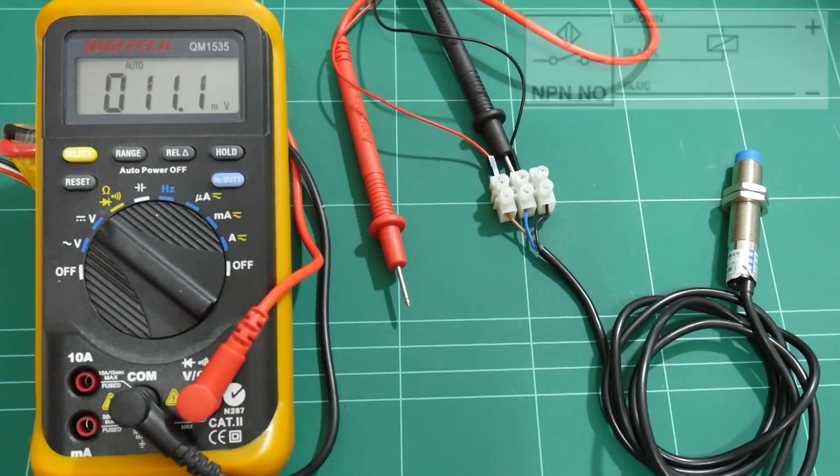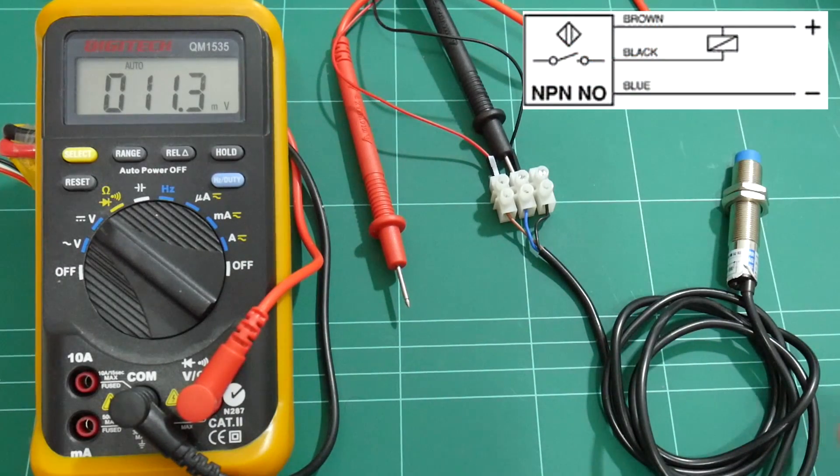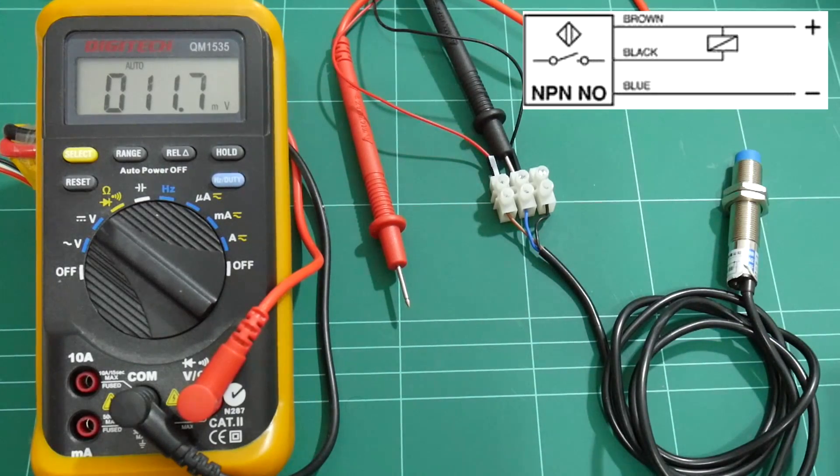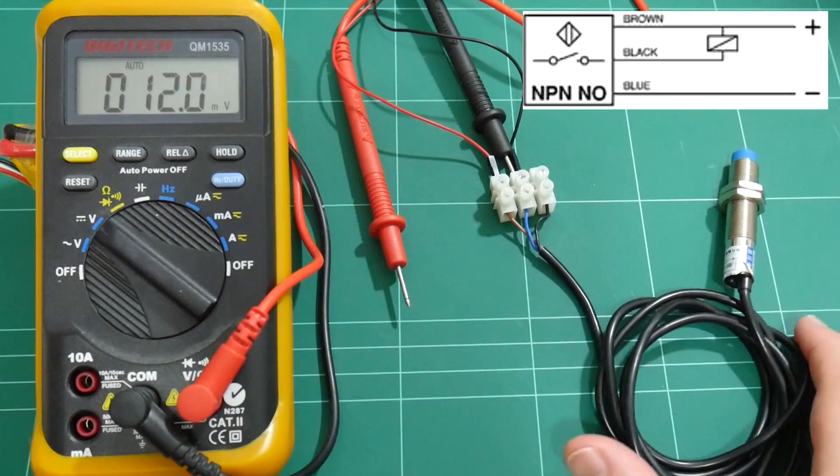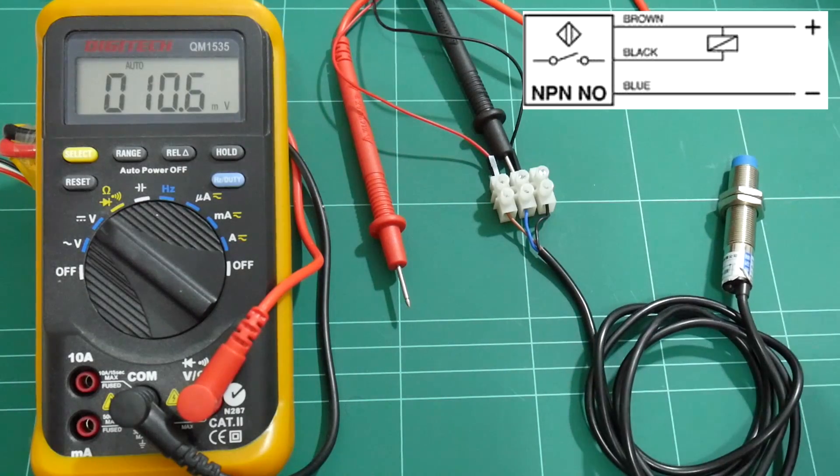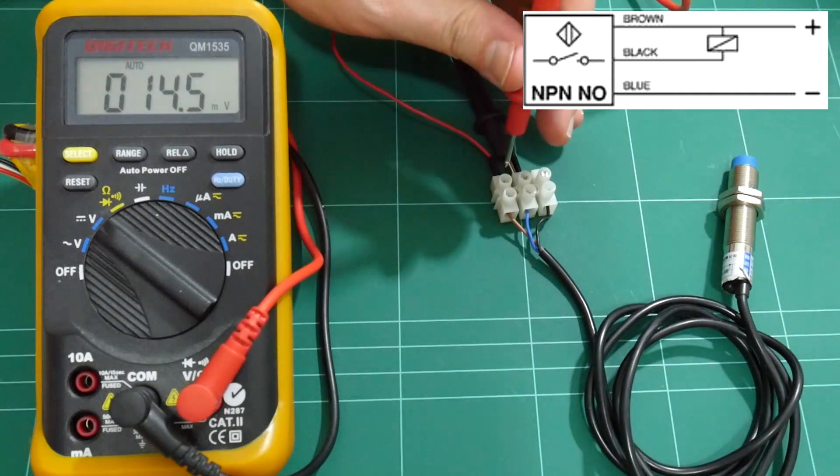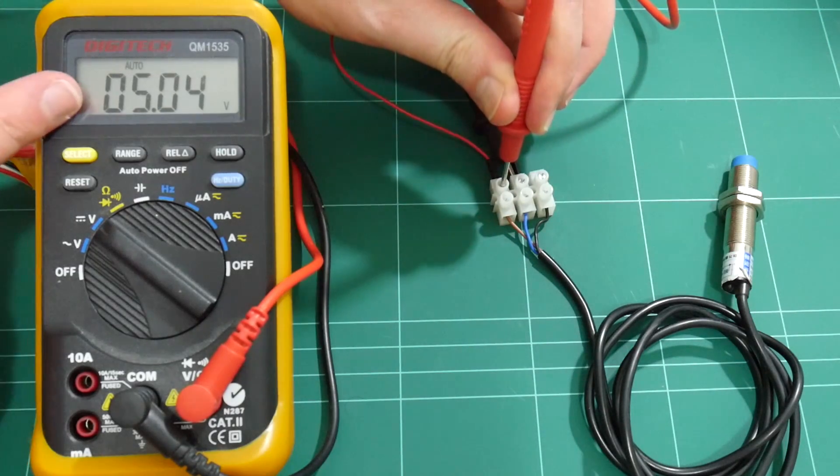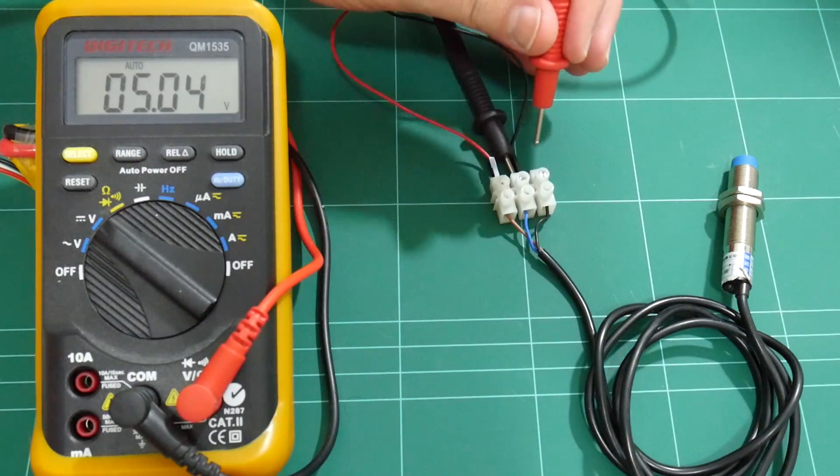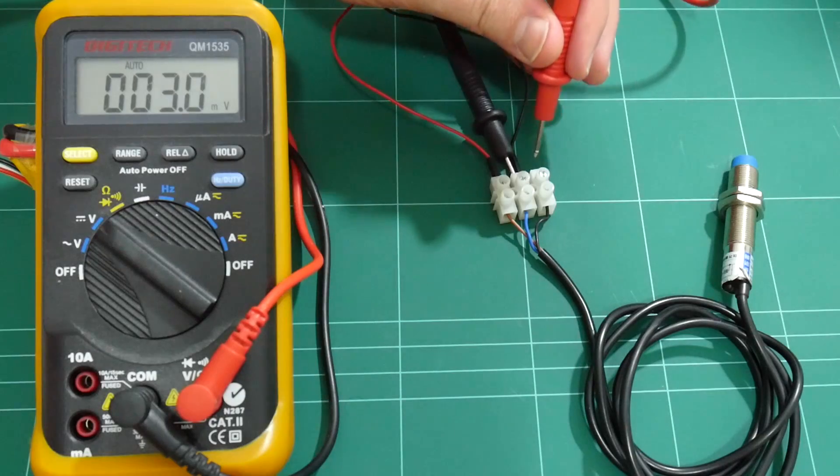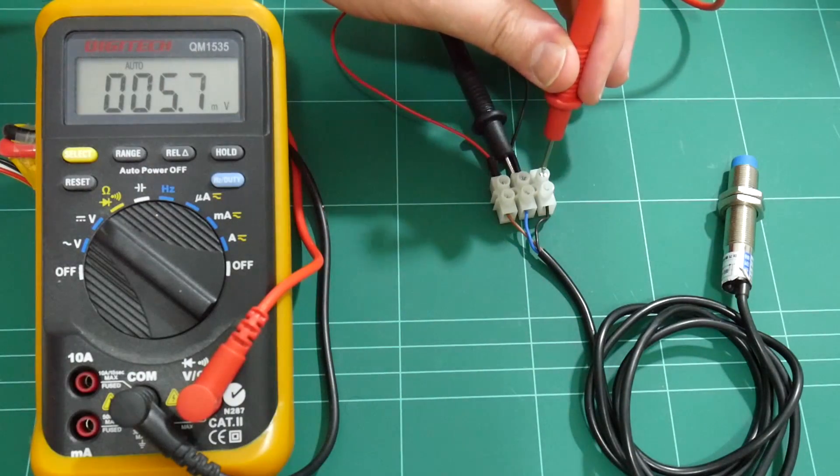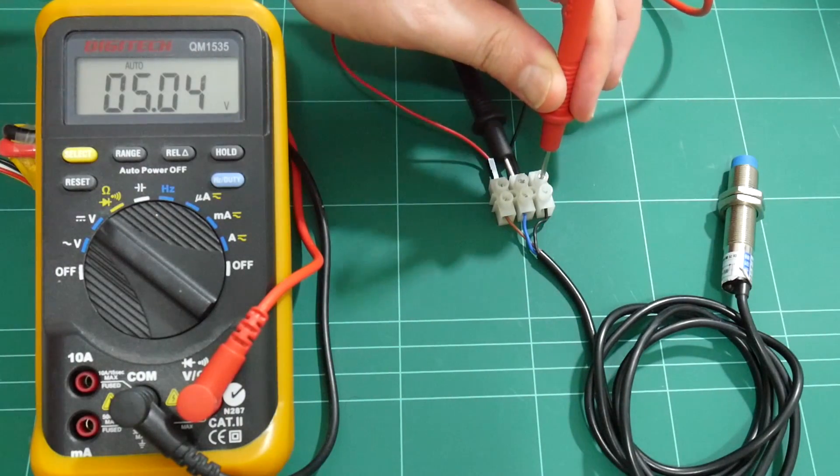So I've switched over the probe to the NPN probe. This is the one that I've been using for a few months, and I know for a fact it does not work on 5 volts. So at first, I'll show you how this probe behaves when it doesn't work on 5 volts. So again, I'll just measure the input voltage here. So we are looking at 5 volts.